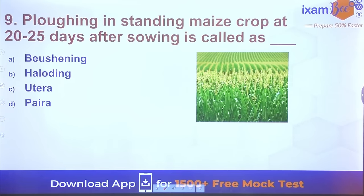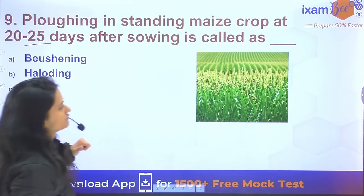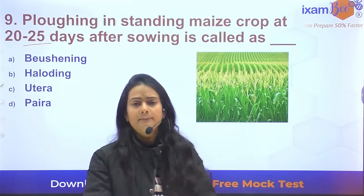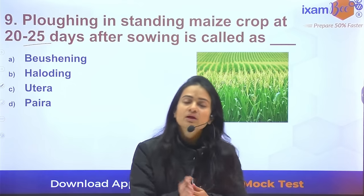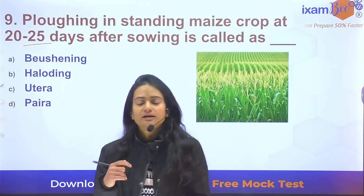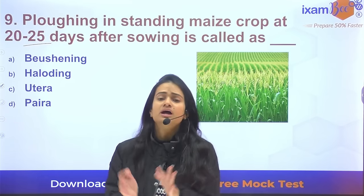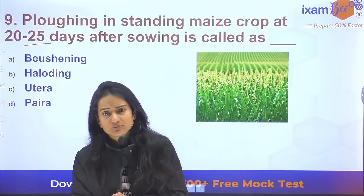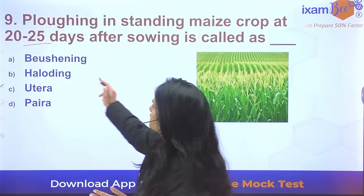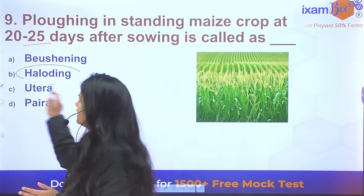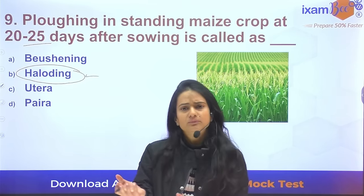Question 9: What is blowing in a standing maize crop at 20–25 days after sowing called? At 20–25 days after sowing in maize, this process is known as thinning or earthing up — the operation done at that stage.